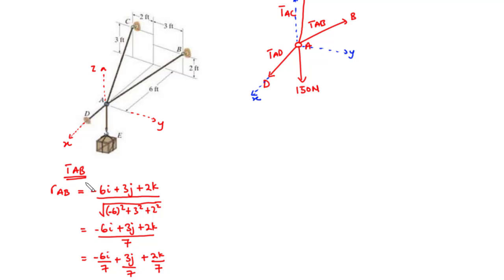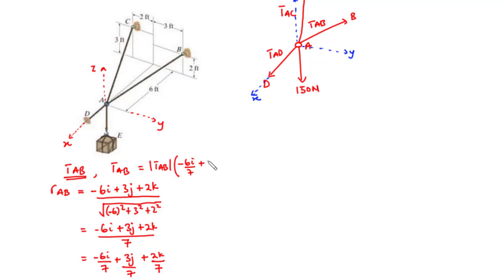To represent the force TAB as a Cartesian vector, we multiply the magnitude of the force by the unit vector. So TAB equals the magnitude of TAB times (negative 6I over 7 plus 3J over 7 plus 2K over 7).